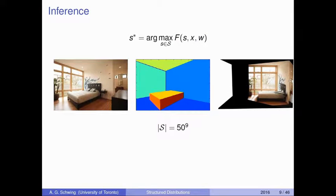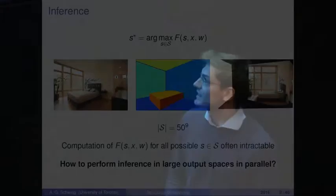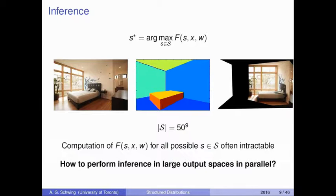Why is finding S star — the output space object that maximizes over the set of all possible output space configurations calligraphic S our scoring function F — such a problematic task? For the motivating indoor scene example, we need roughly 50 to the power of 9 three-dimensional configurations to discretize the 3D space in a reasonably dense manner. Searching over all those 50^9 discrete configurations one by one — computing 50^9 scores F — is not feasible. So the question is: how do we perform this inference task effectively in large output spaces, and how can we do so in parallel?